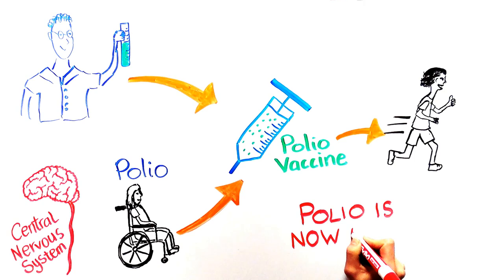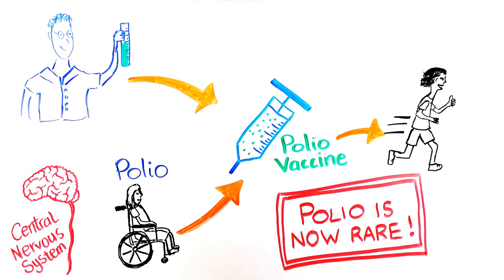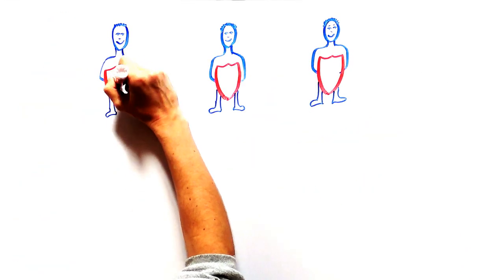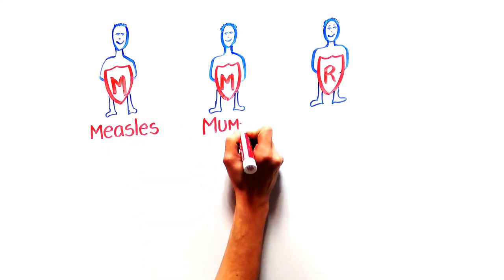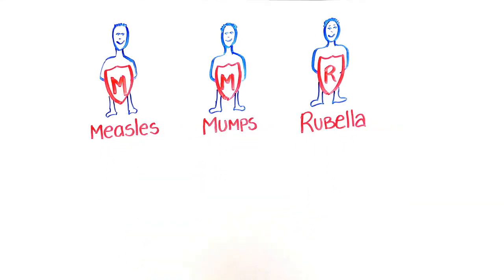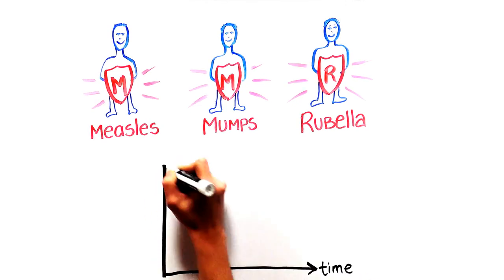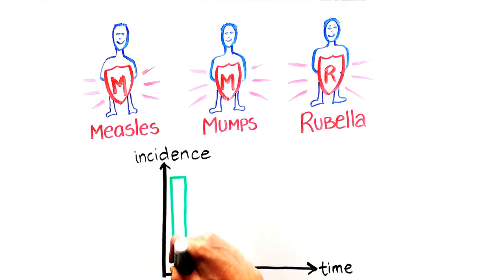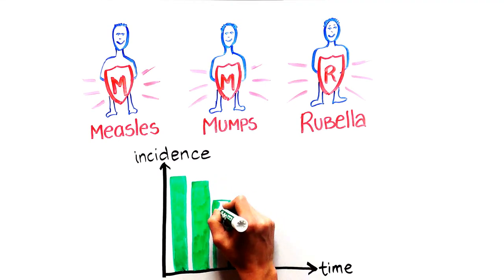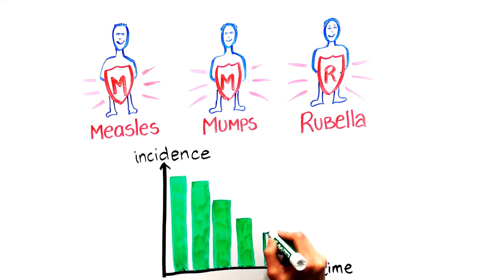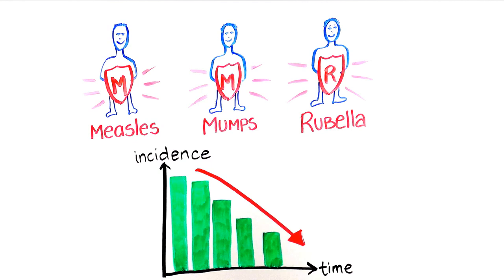The development of vaccinations have allowed researchers to combat other common and sometimes deadly childhood diseases such as measles, mumps, and rubella. In fact, very few people in our day and age have heard of some of these diseases since vaccines have dramatically reduced the number of cases of these and many other childhood diseases.